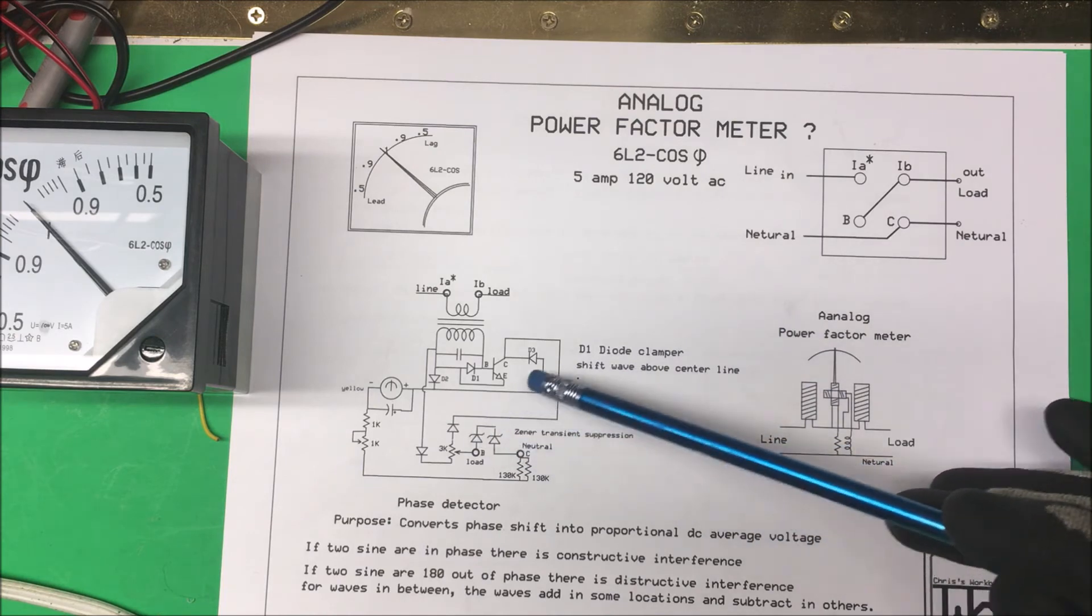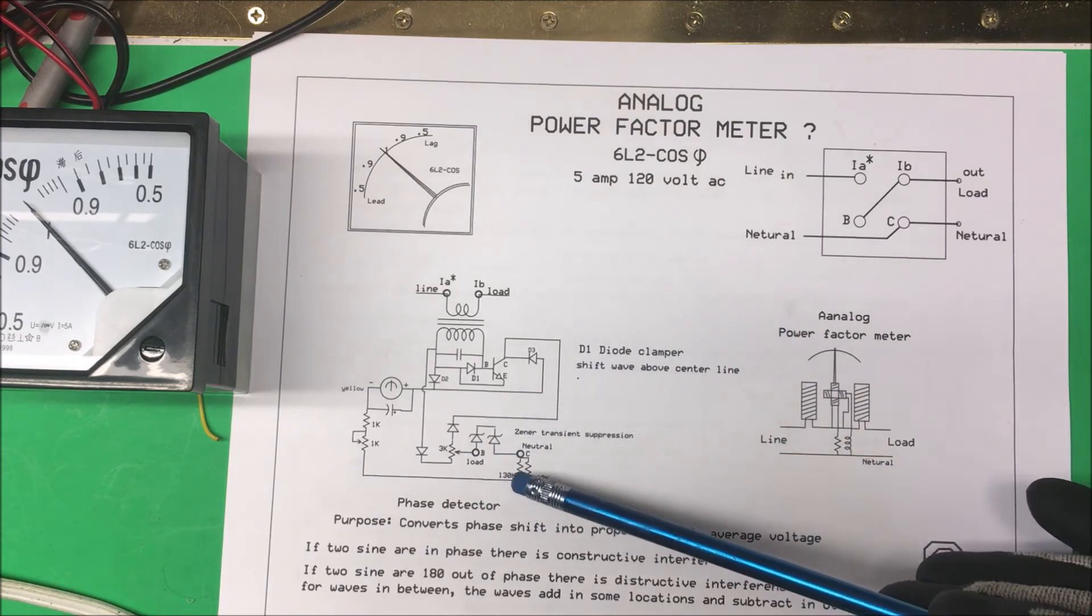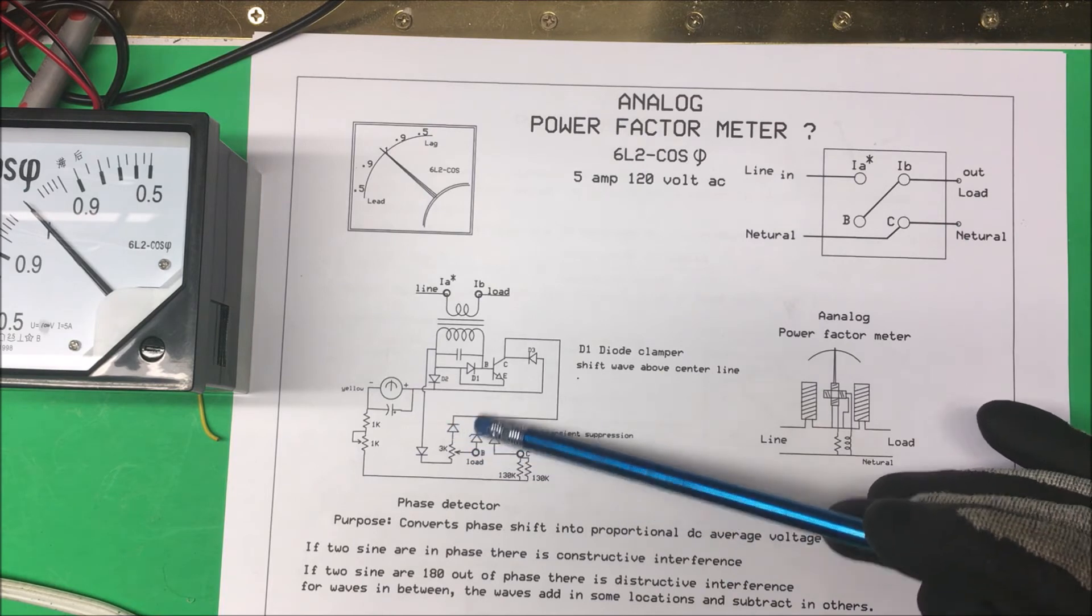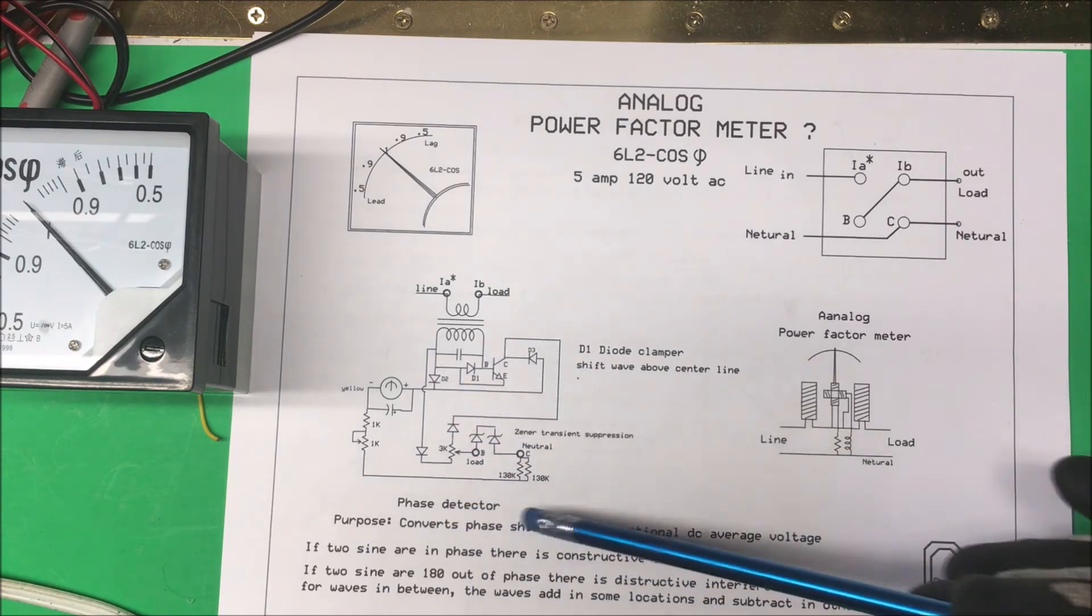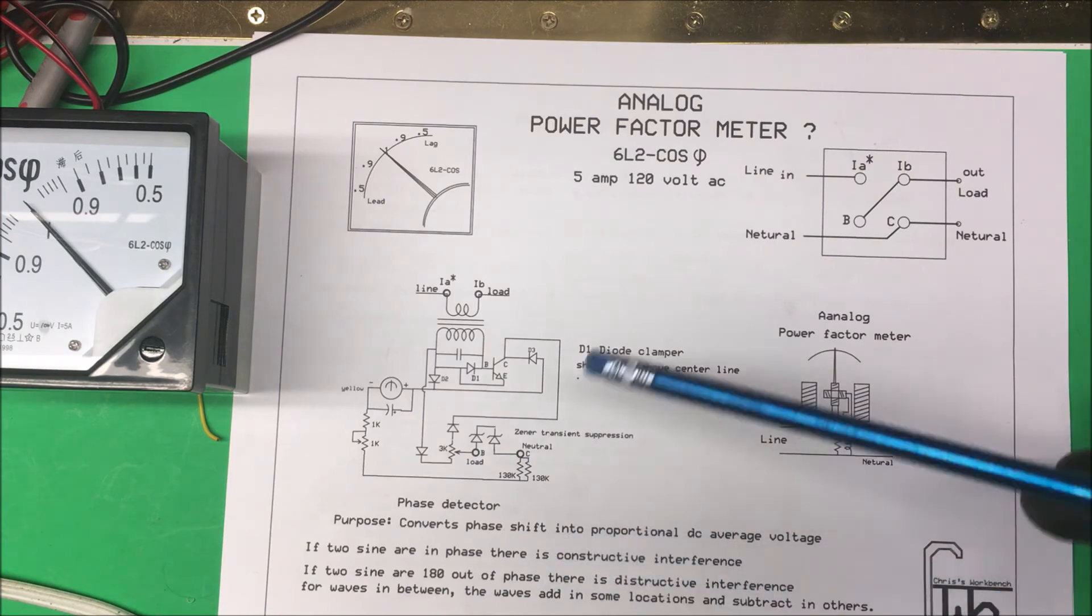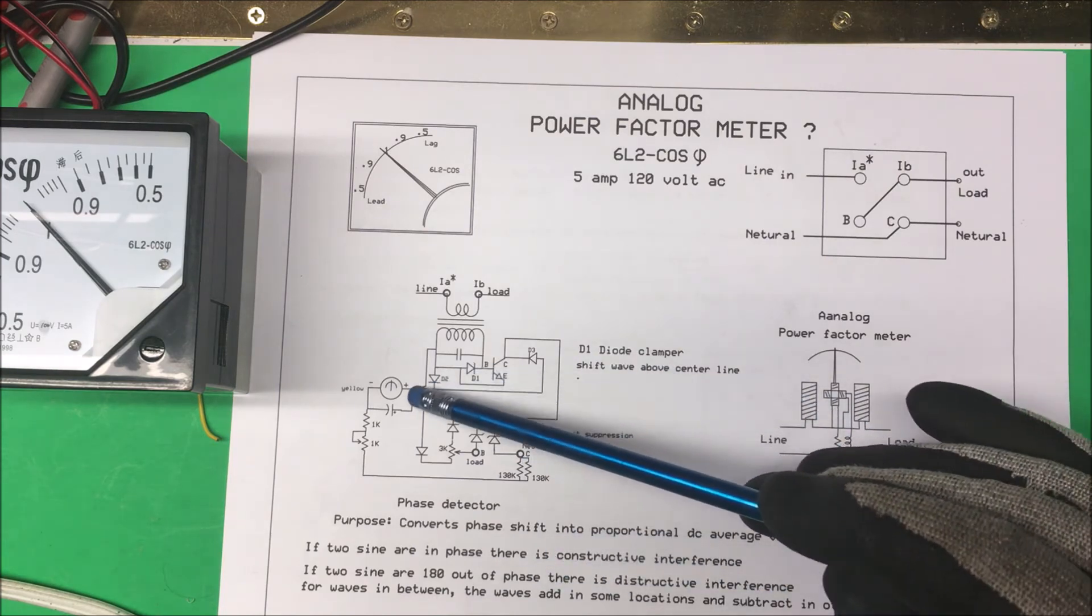At any rate, that's basically all it does. We're just mixing the two signals together and anything that's when the phases are in phase with each other they'll cancel out, and whatever's left over will come out to the meter here.